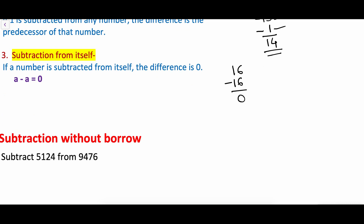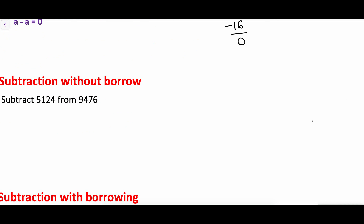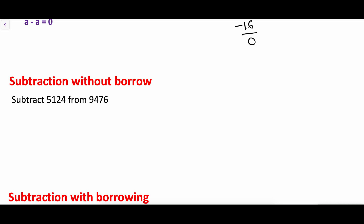So these are the three properties of subtraction. Now let's see subtraction without borrow. Subtract 5124 from 9476. In subtraction, we write the greater number on top, so the greater number is 9476 and we subtract 5124 from it. Before subtraction, we write the place value of all digits: ones, tens, hundreds, and thousands.